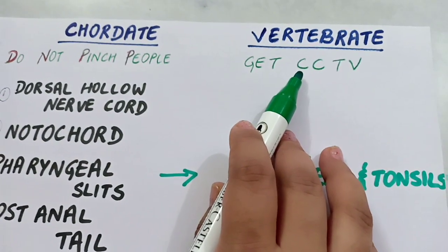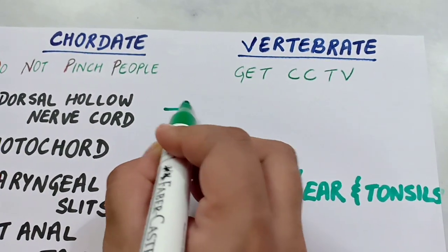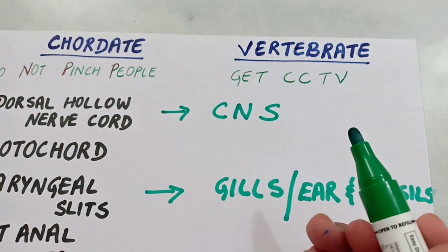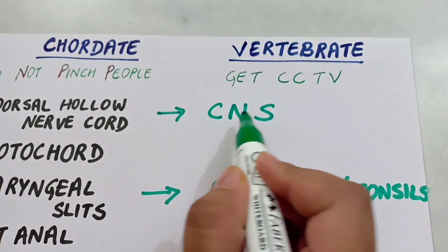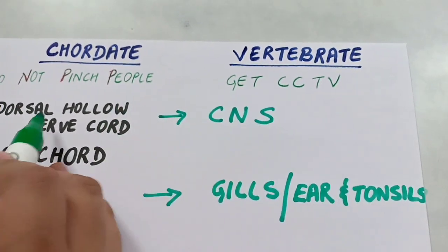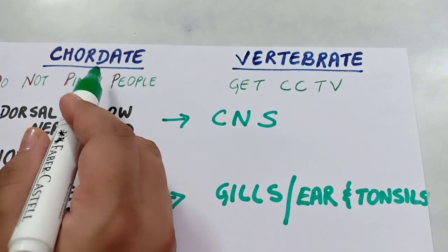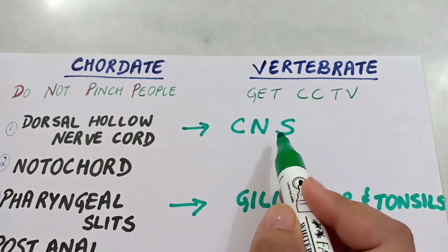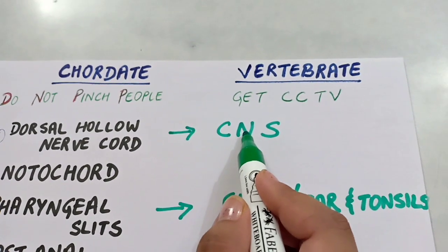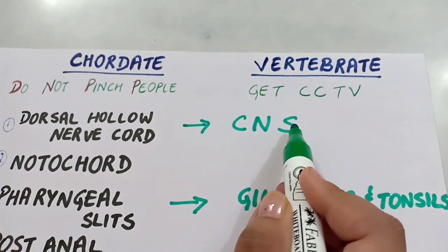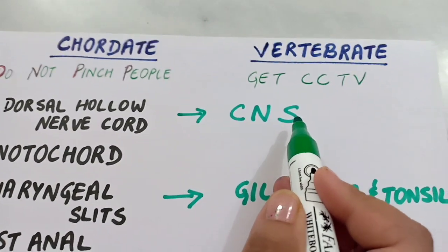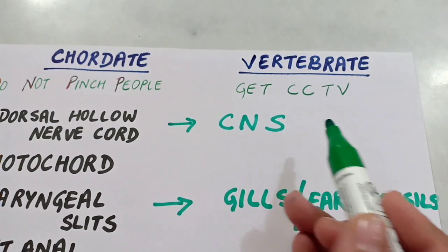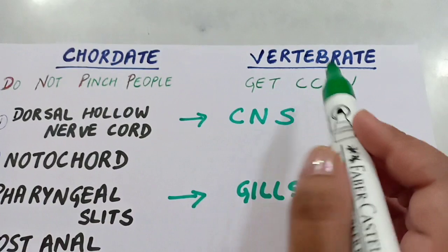Then in 'CCTV,' with the first C we have to remember CNS — central nervous system. The dorsal hollow nerve cord present in chordates gets converted in later developmental stages into the central nervous system, which comprises the brain and the spinal cord.